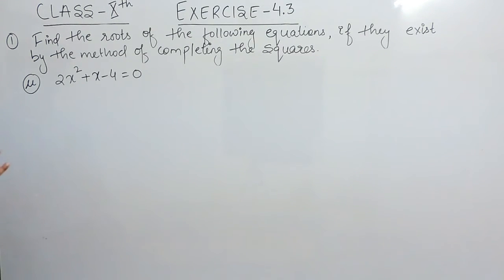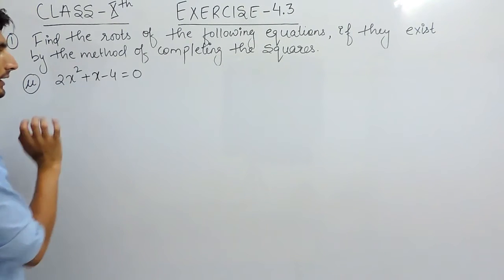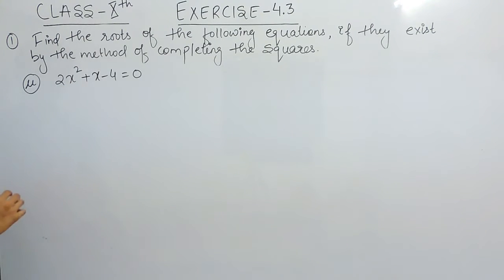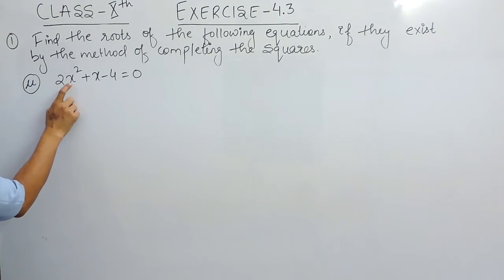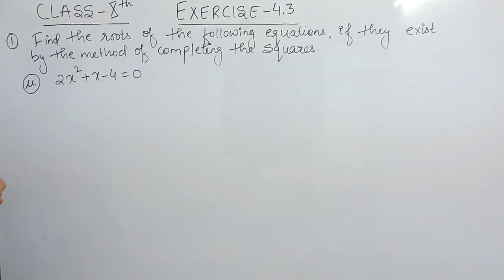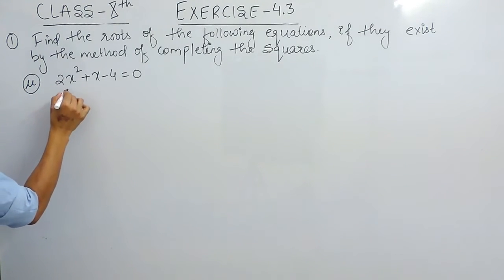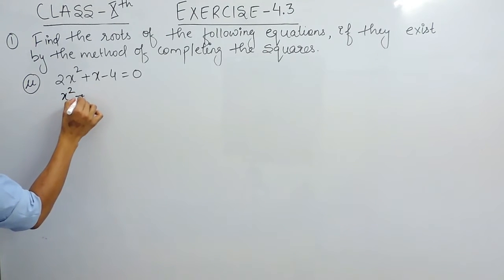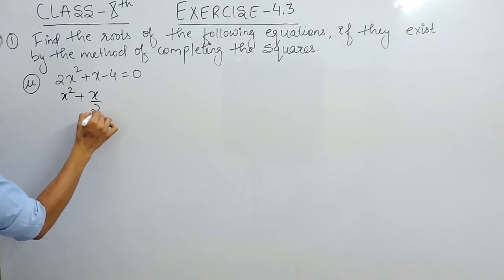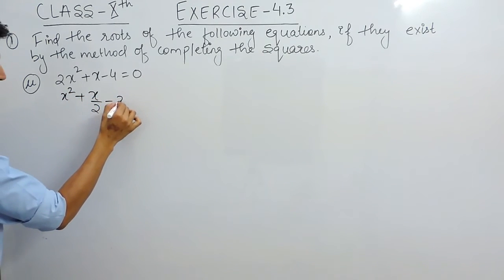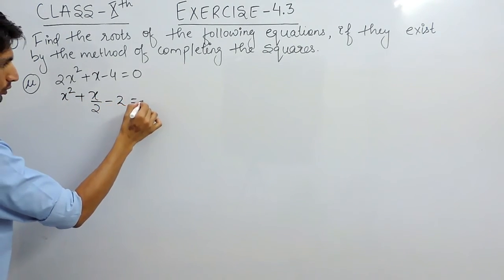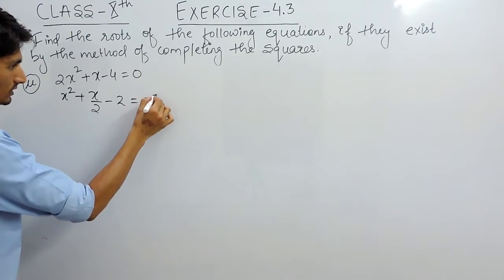Now we know what the completing the square method is — you have to make the coefficient of x squared as 1. So again divide this whole equation by 2. The equation will become x squared plus x by 2 minus 2 equals to 0.